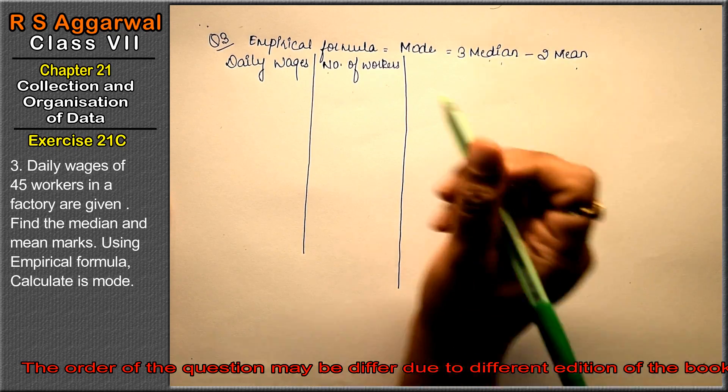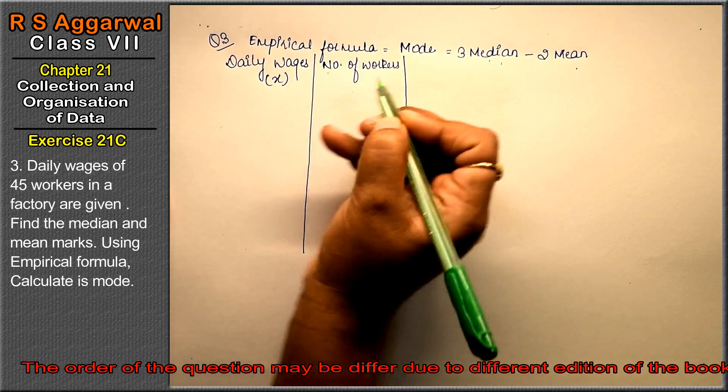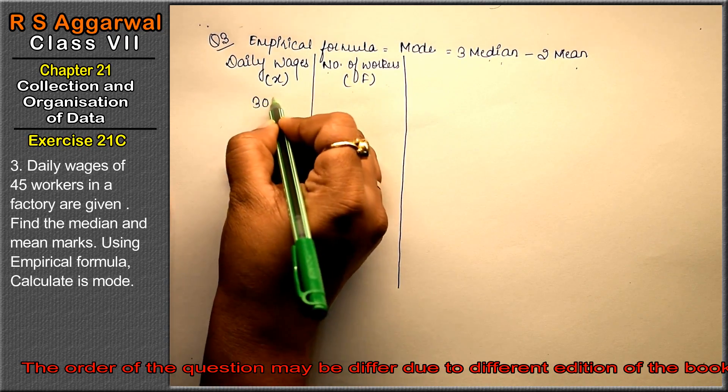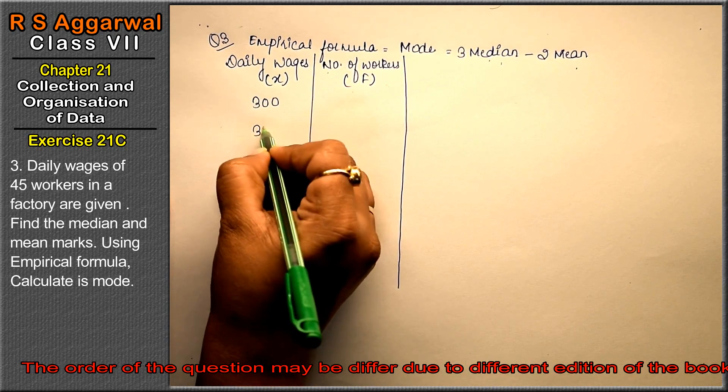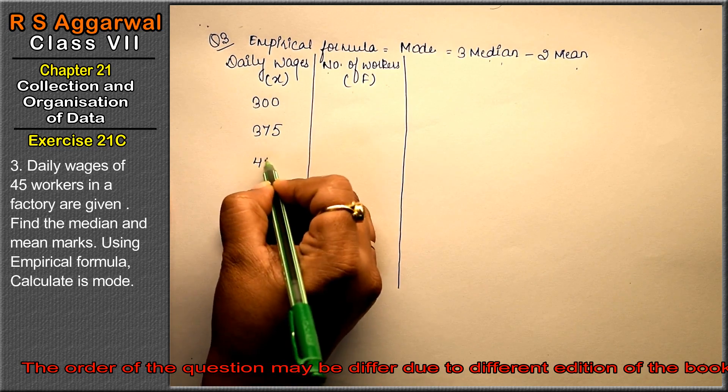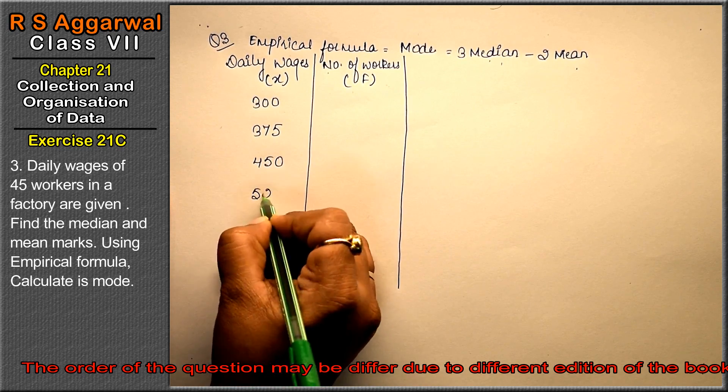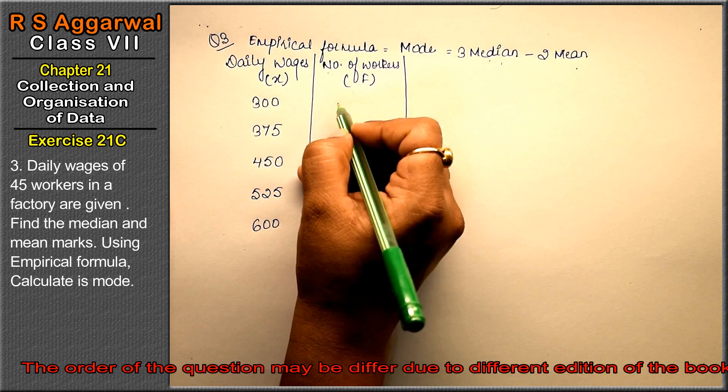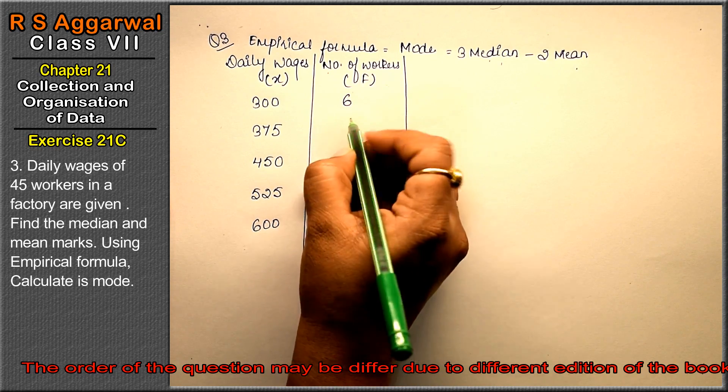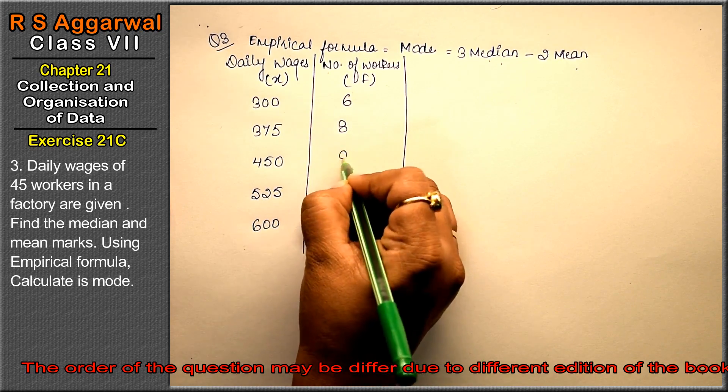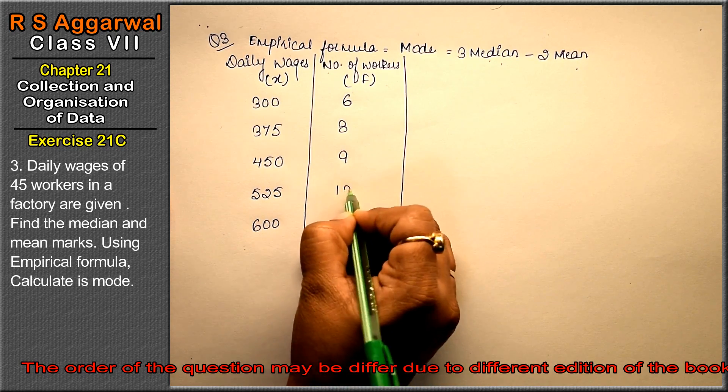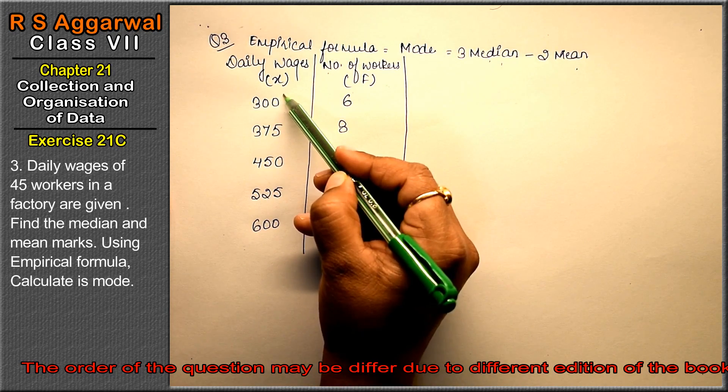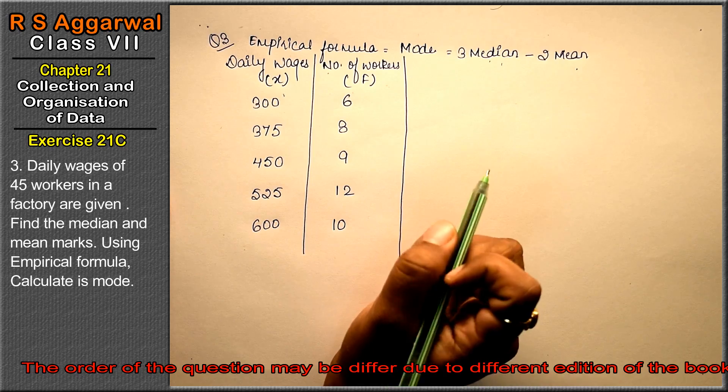Daily wages is our x and number of workers is our f. So let's see: 300, 375, 450, 525, and 600. The number of workers are: for 300 there are 6, then 8, then 9, then 12, and then 10. Most importantly, x is in ascending order.